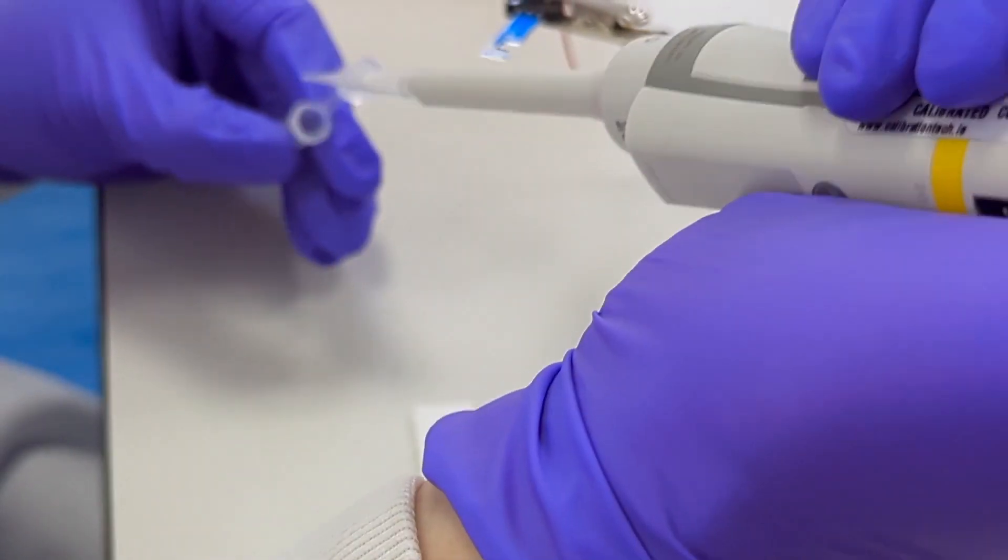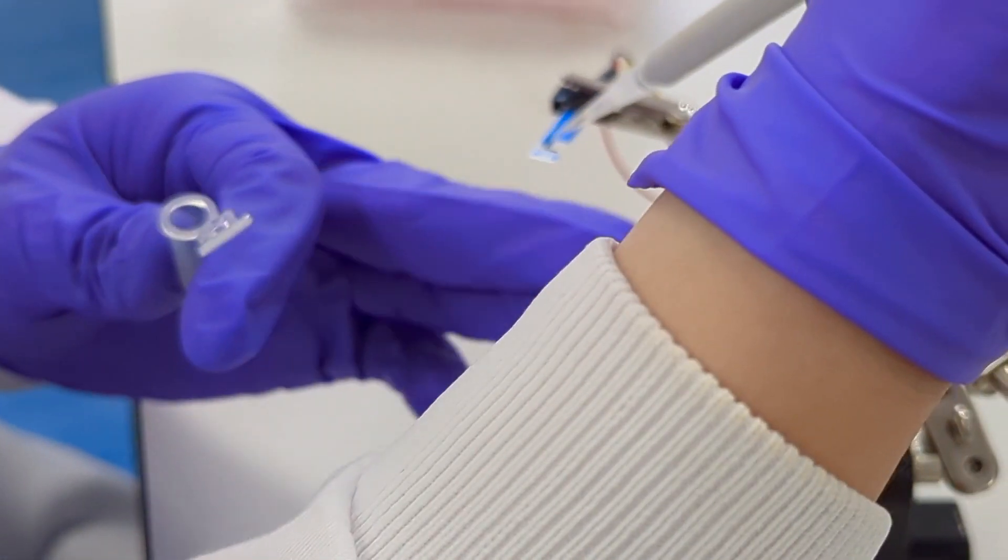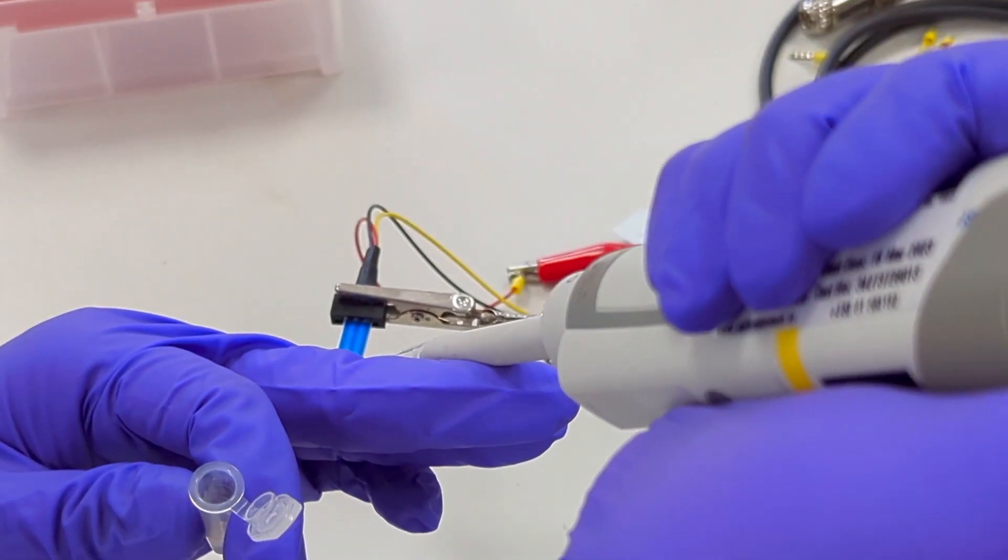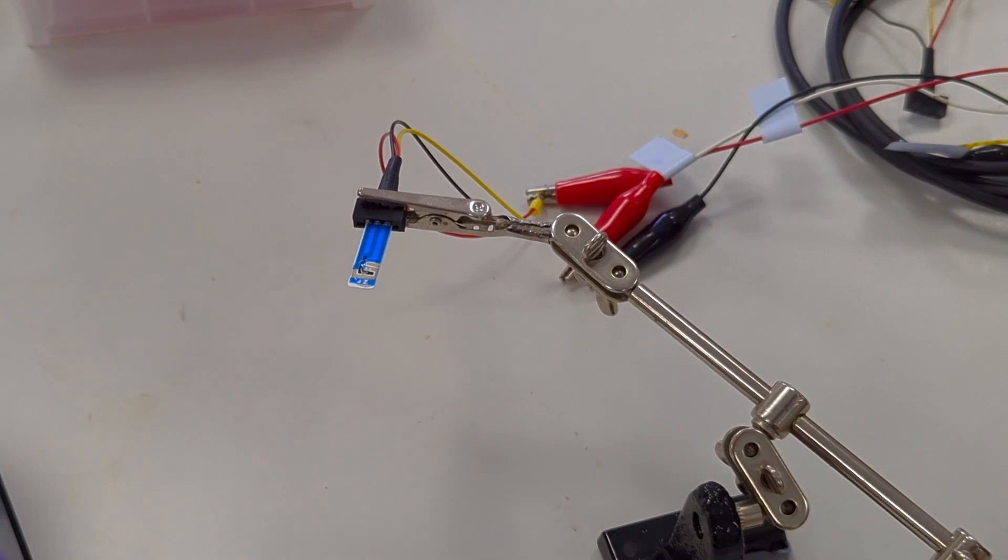Then we prepare 40 microliters of the second sample onto the sensor surface. Once all the electrodes are covered, we can start the electrochemical measurement.